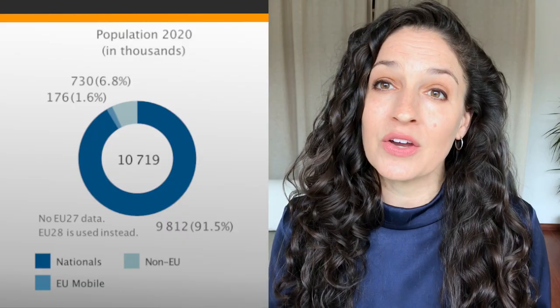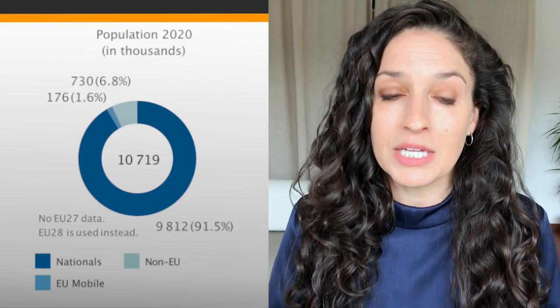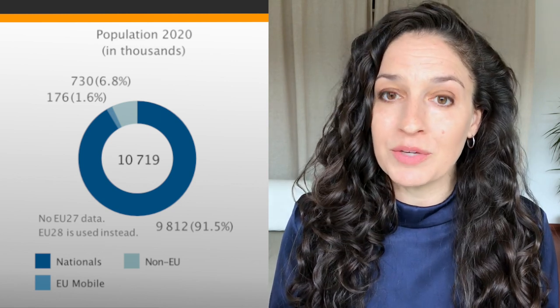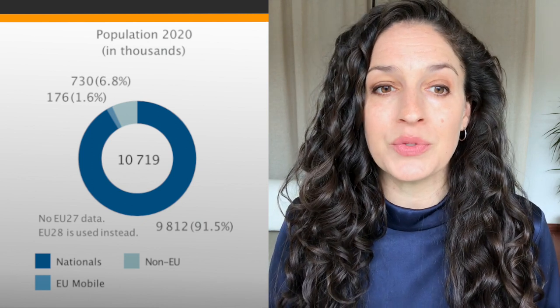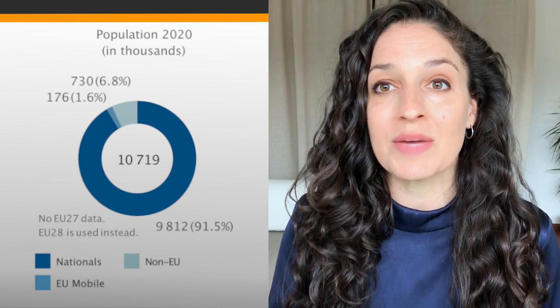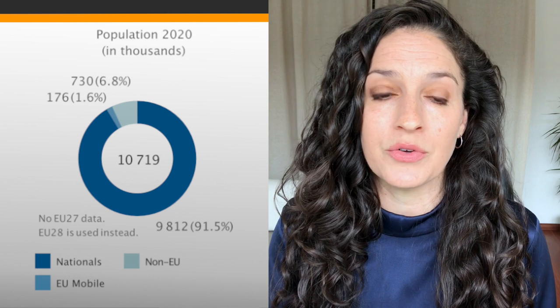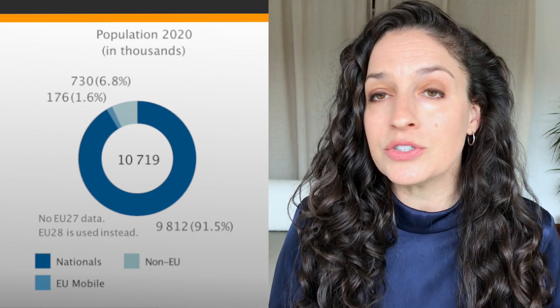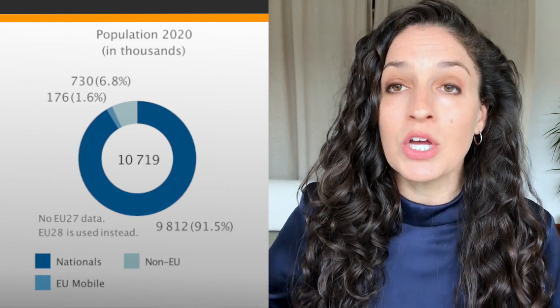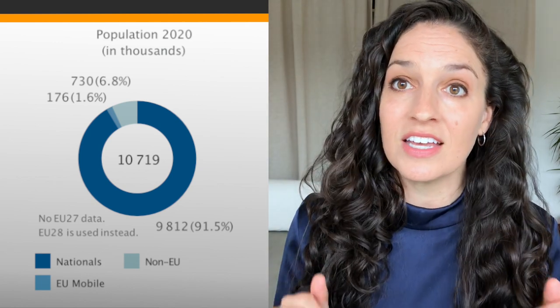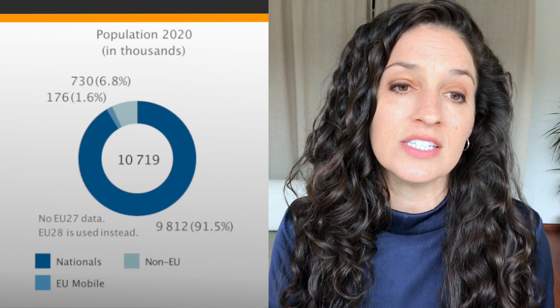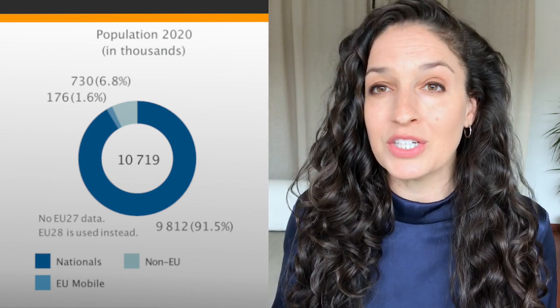First, let's look at population indicators. In Greece there are almost 11 million people, and of those 11 million, around 6.8 percent are immigrants from outside of the European Union and 1.6 percent are immigrants from within the European Union. Compared to other countries in Western Europe, you don't see as high stocks of immigrants in Greece as in some other countries.